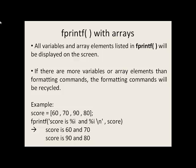All variables and all array elements listed to the right of the comma in an fprintf statement will be displayed on the screen. If there are more variables or array elements than formatting commands, the formatting commands will be recycled until every single variable and array element is printed. So in this example, we have score and it has four values — four array elements. It's a one by four array. If we say score on the right side, we are going to print off every single value in score, regardless of the number of formatting commands inside the single quotes.